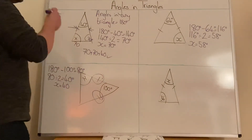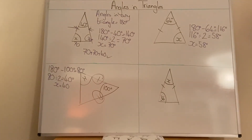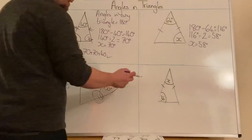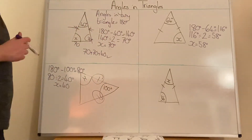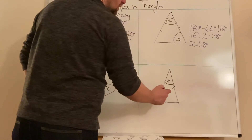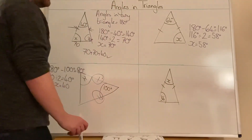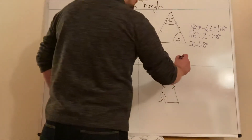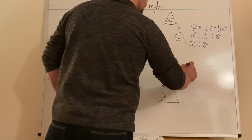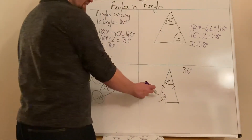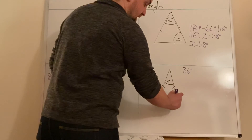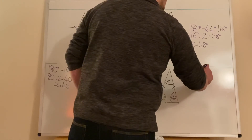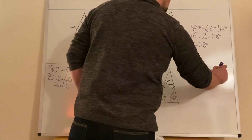Right, last question. Why is this one different compared to the one above? The difference is that instead of looking for an angle at the bottom, we're actually looking for an angle at the top. So we need to change our method slightly. We're given 36 degrees, and if that's 36 degrees there, this other base angle must also be 36 degrees for it to be an isosceles triangle. So we do 36 plus 36 degrees, which equals 72 degrees.